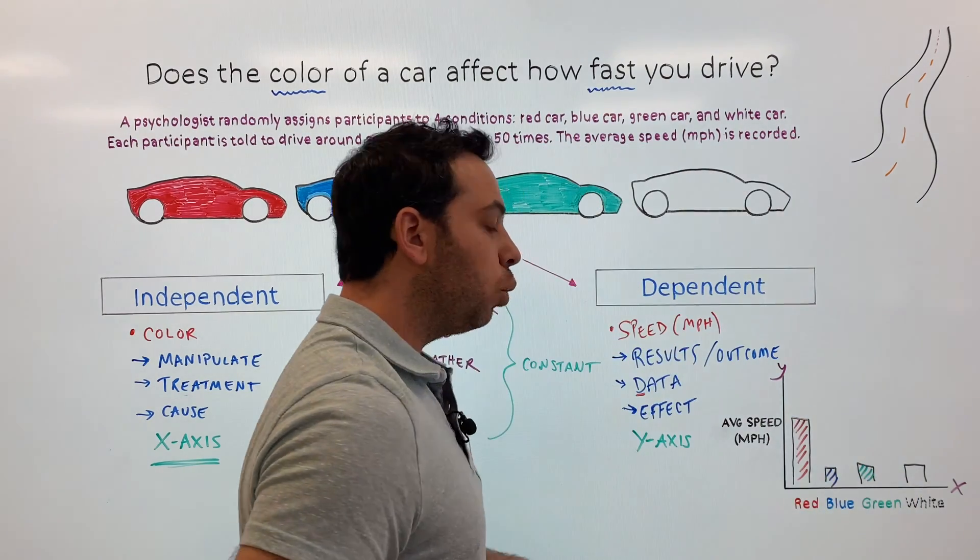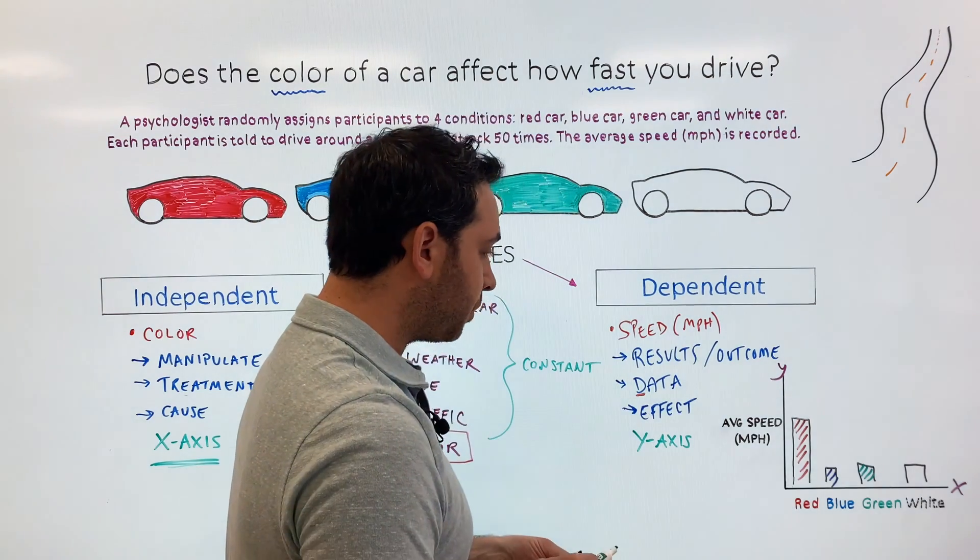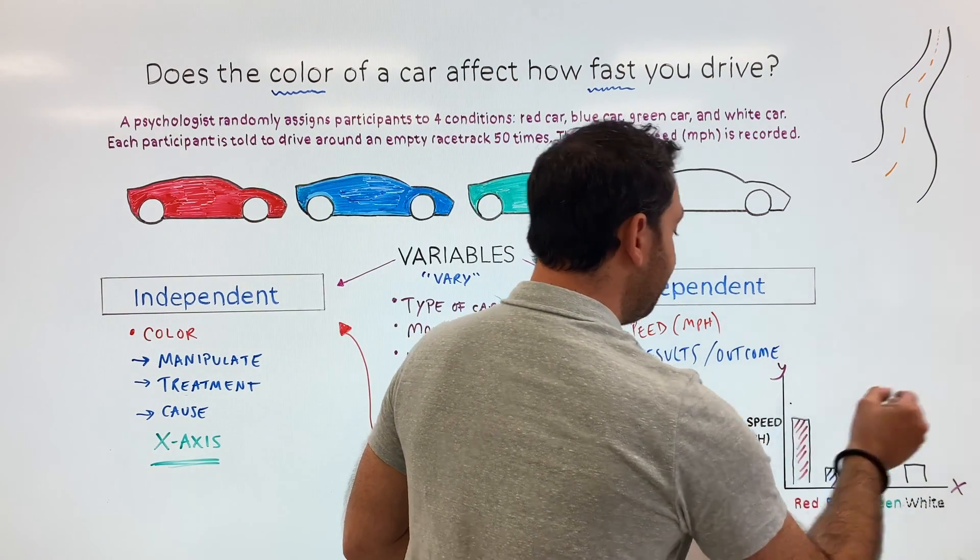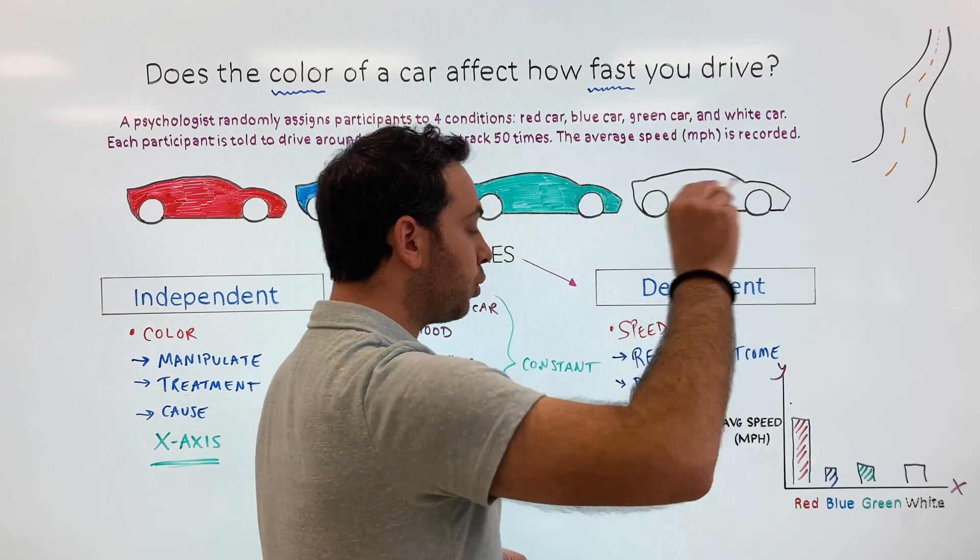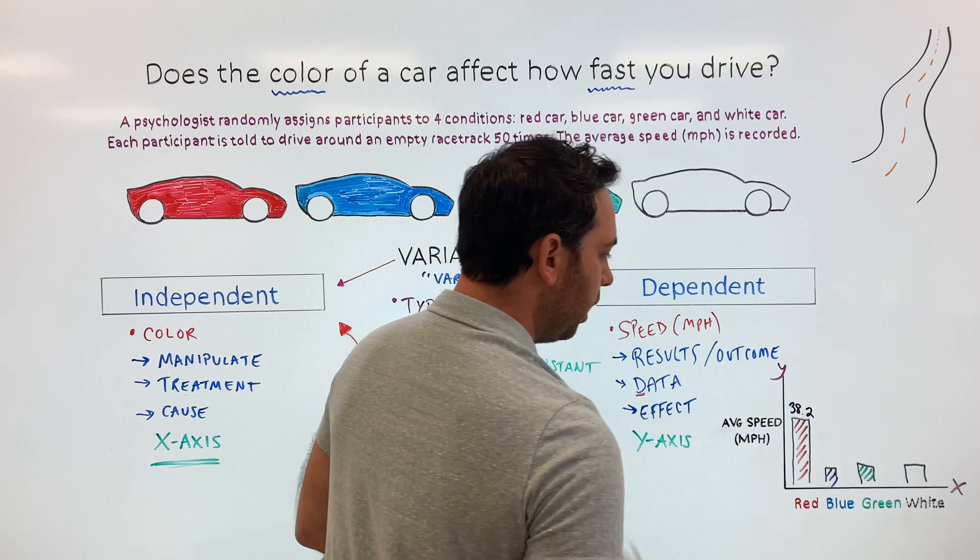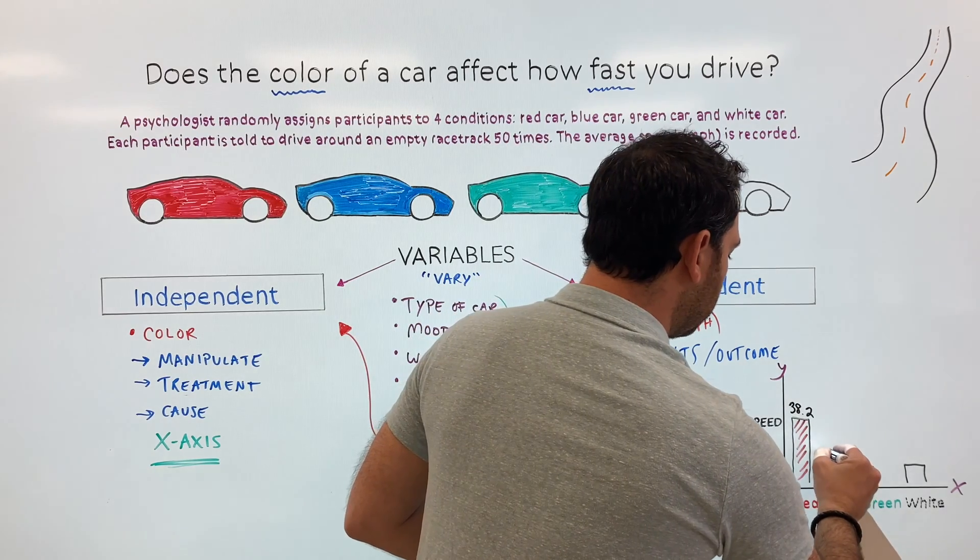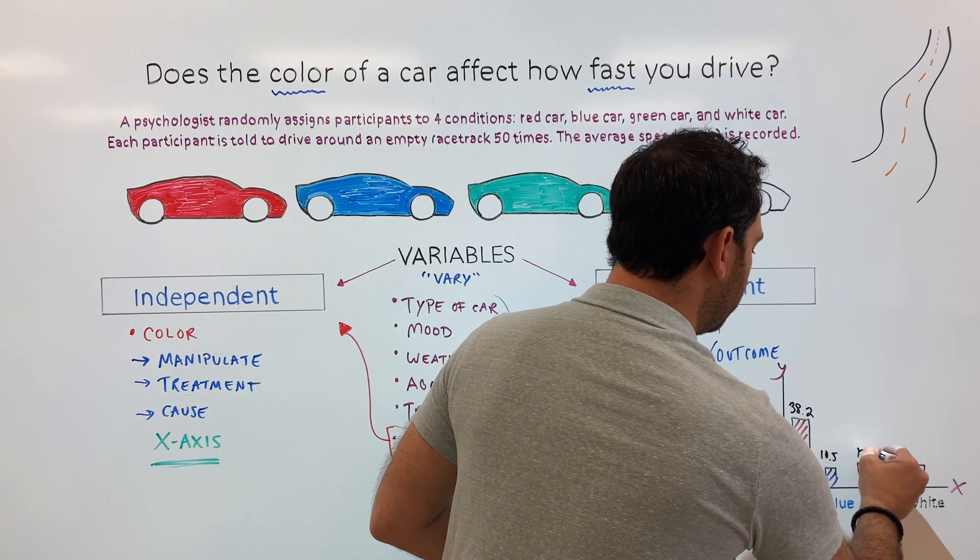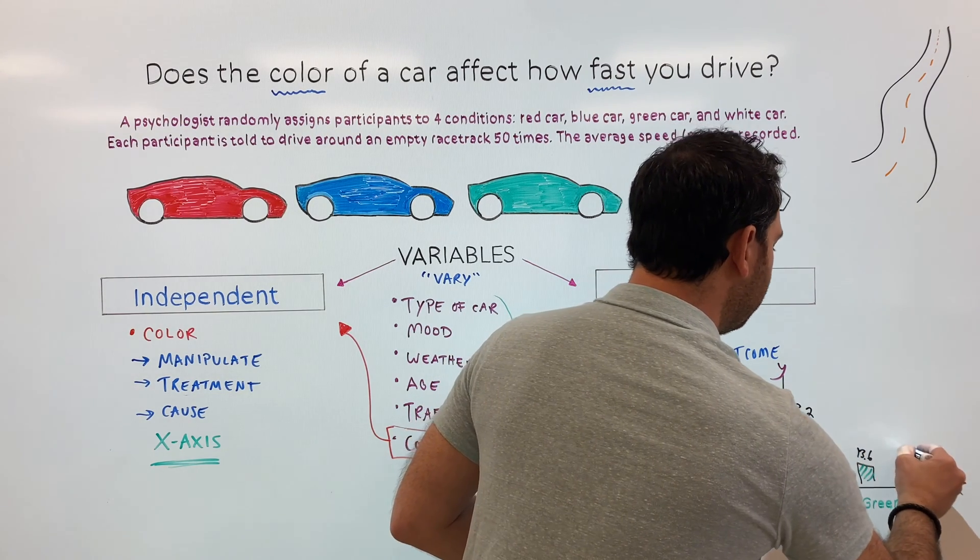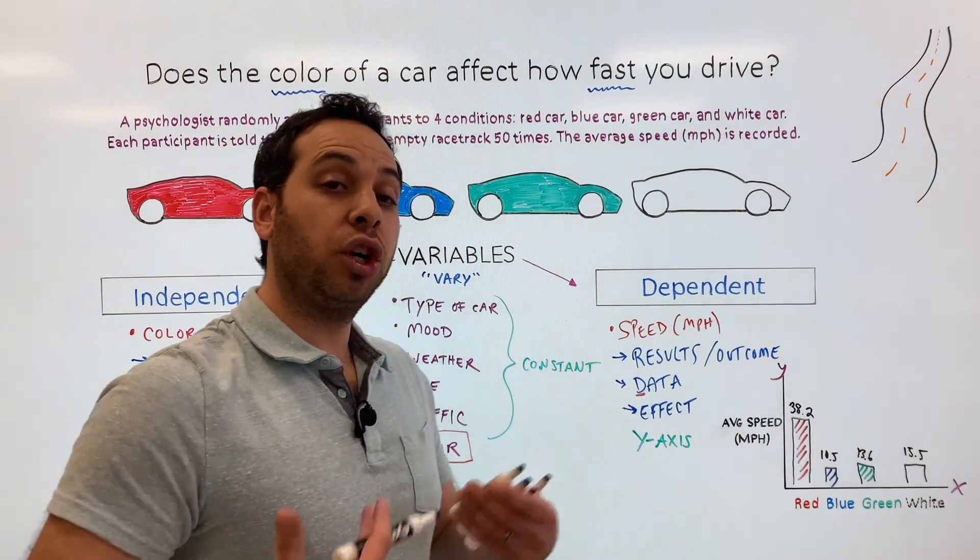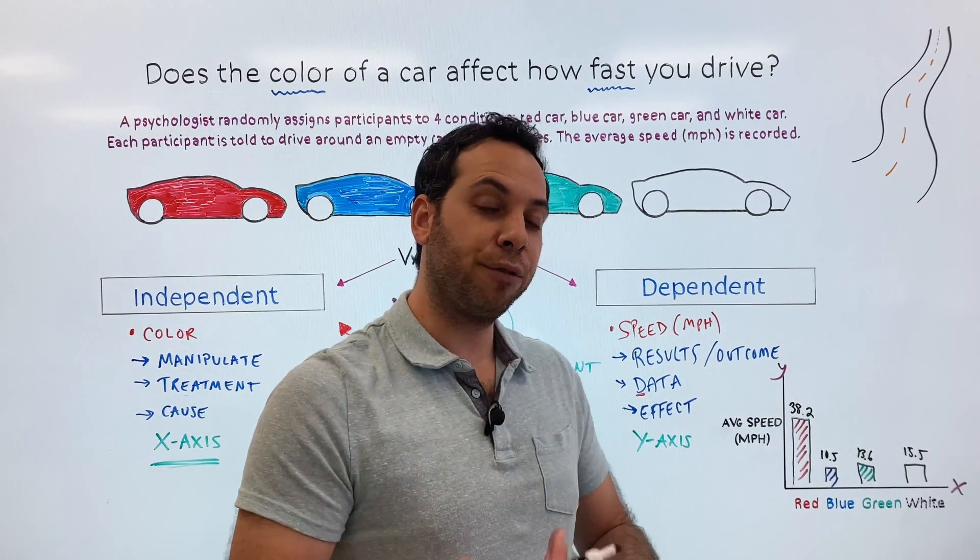And now what we want to know is what was the average miles per hour? Well, we can just think about it. Red, maybe it was out of 50 circles around the track, maybe it was 38.2 miles per hour. And maybe blue was 10.5 miles per hour. And green was 13.6 miles per hour. And white, maybe 15.5 miles per hour. And then you can actually conclude or make some inferences from those results.